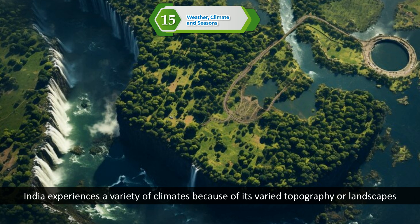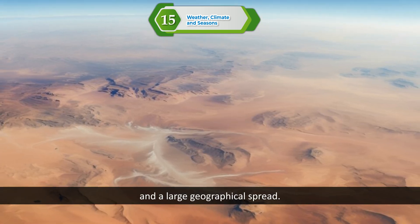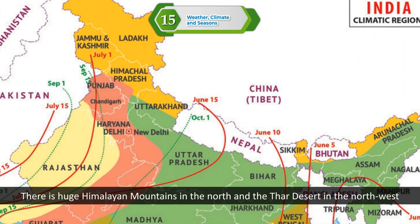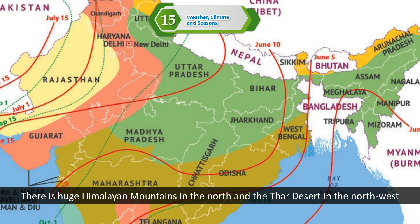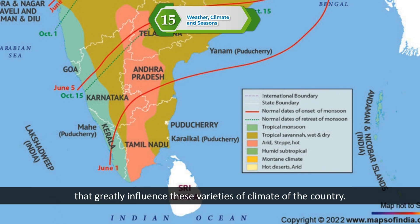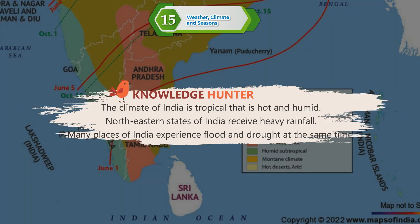India experiences a variety of climates because of its varied topography, landscapes, and large geographical spread. Look at the map to know about the different climatic zones of India. There are huge Himalayan mountains in the north and the Thar Desert in the northwest that greatly influence these varieties of climate. The climate of India is tropical, i.e. hot and humid. North-eastern states of India receive heavy rainfall, and many places experience flood and drought at the same time.